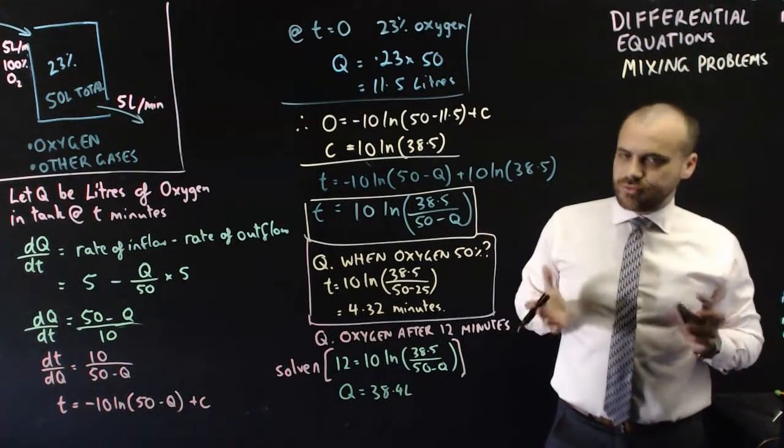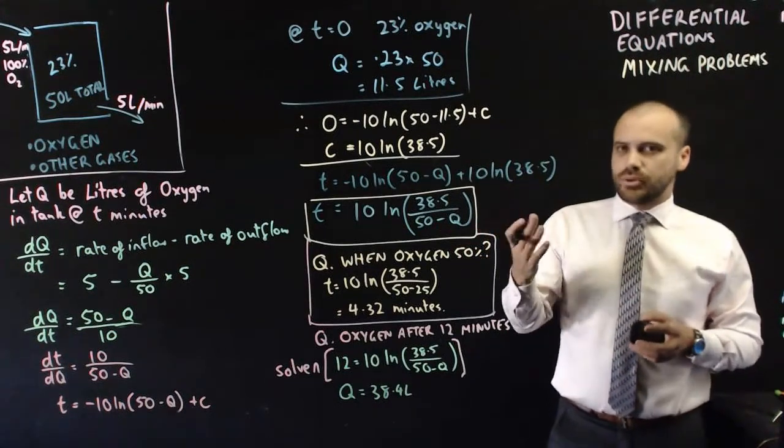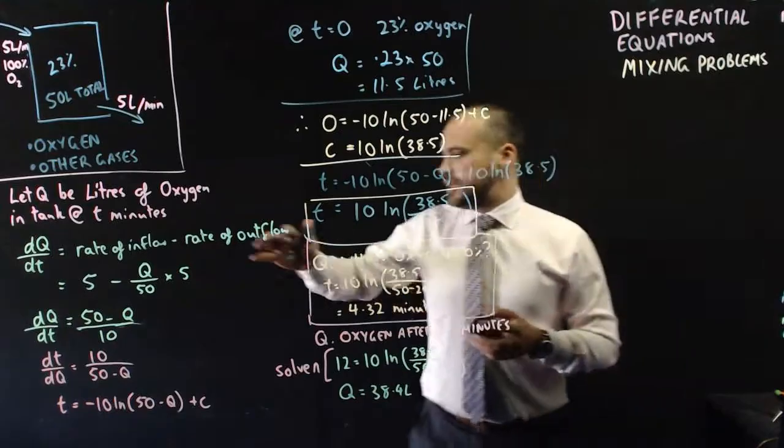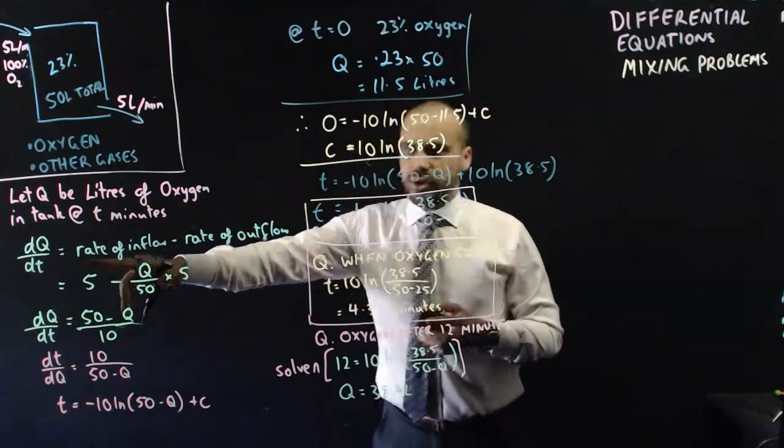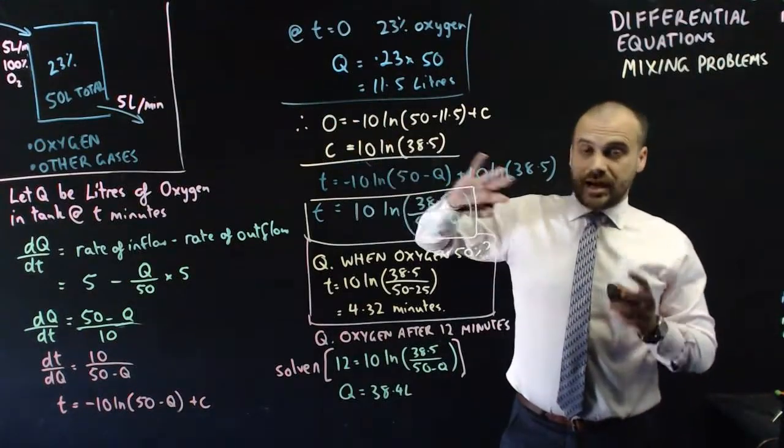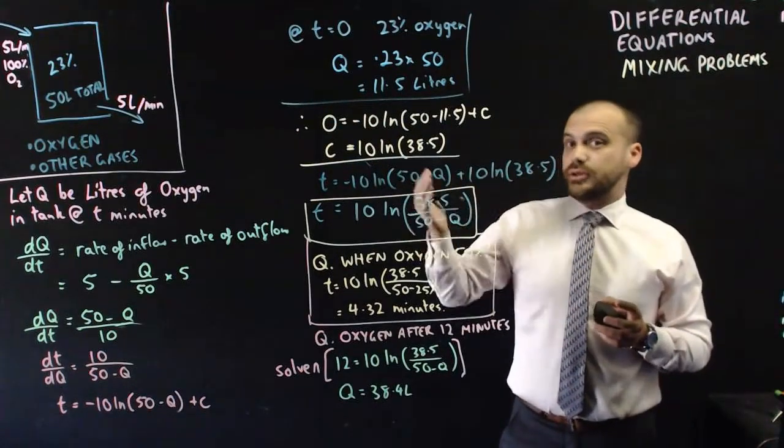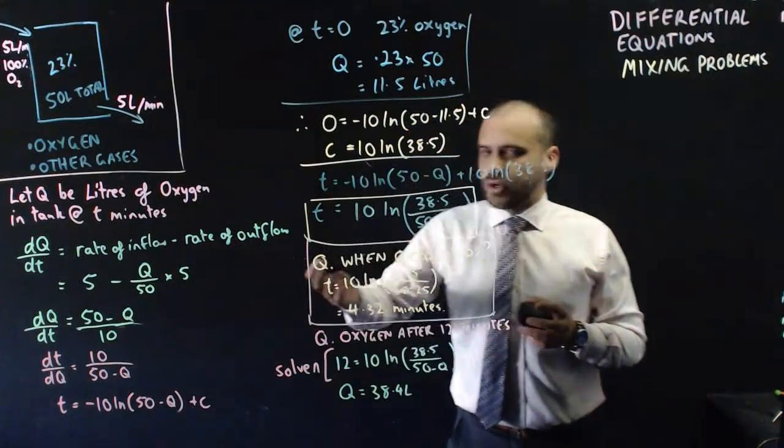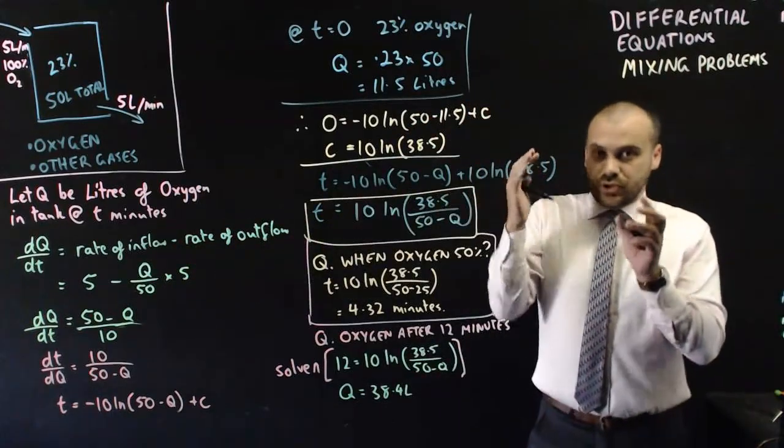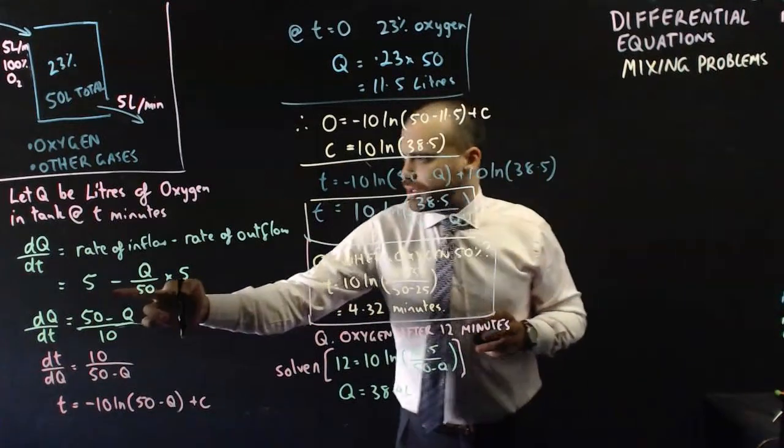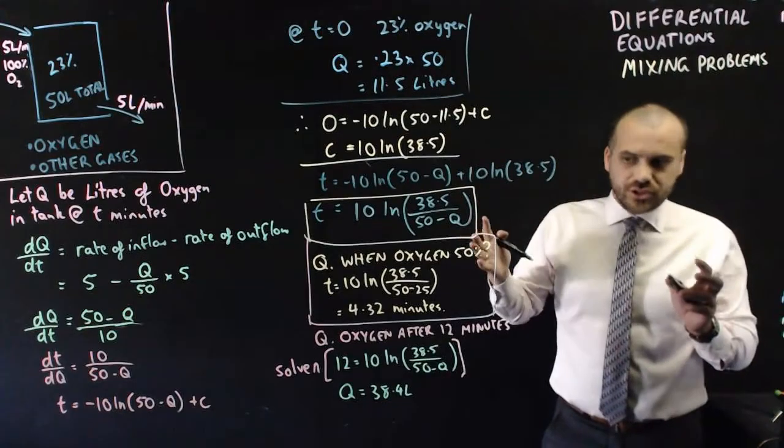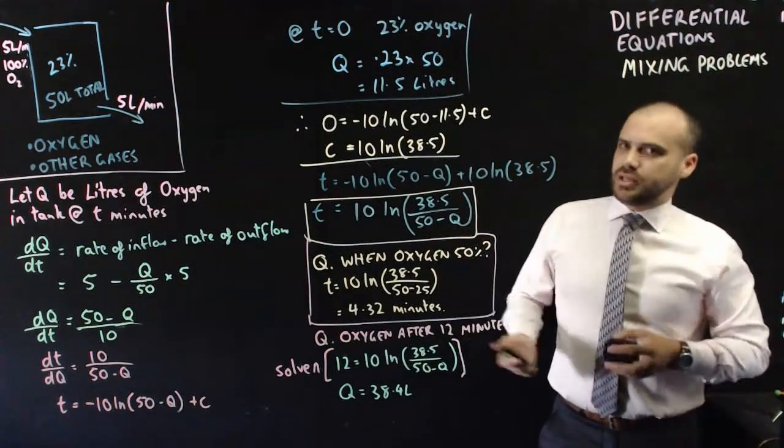I can't go through every single type of question here when it comes to these mixing problems, but they're all the same. It's all a box with stuff coming in, stuff coming out. It's a rate of inflow. Sometimes there's a rate of inflow of zero. Sometimes you're putting gas in there that has no oxygen in it. So the rate of inflow is zero. A rate of outflow, and that's always some sort of percentage arrangement because you've got some amount and then it's changing over time. It's really the setting up. Once you've set the thing up, then it's no different to solving any other differential equation. And then once you've done that, you're just subbing in values.